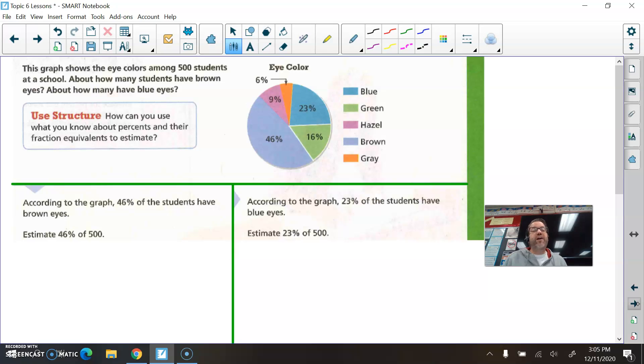All right, so let's look here at an example. This graph shows the eye colors among 500 students at a school about how many students have brown eyes and about how many have blue eyes. Okay, so brown eyes is shown in the, well, I'm colorblind, so I don't even know what color this is. Brown, and then we have blue over here, and they made them both blue. Isn't that nice? Okay, I think the brown is this one here, and I think the blue is this one over here on this eye color circle graph. So anyway, according to the graph, yeah, 46% of the students have brown eyes.